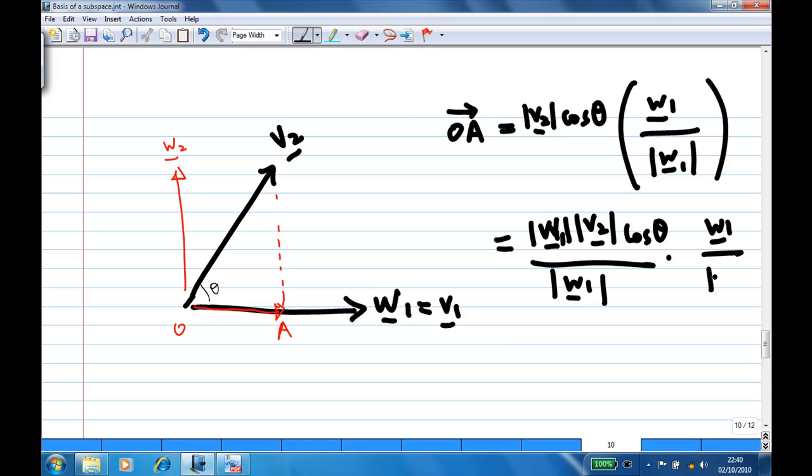So when I do that, something magical happens. Because the expression on the top, the length of w1, the length of v2 cosine theta, is precisely w1 dot v2.